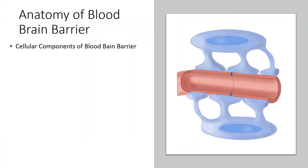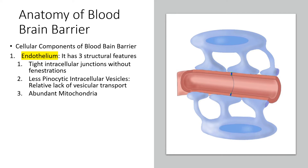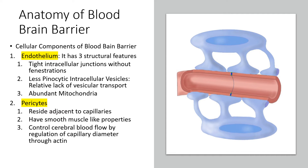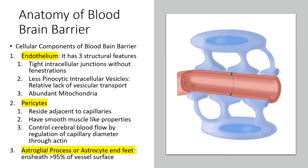The endothelium of the blood-brain barrier has three specific structural features: tight intracellular junctions without fenestrations, fewer pinocytic intracellular vesicles resulting in a relative lack of vesicular transport, and abundant mitochondria. Pericytes reside adjacent to capillaries, have smooth muscle-like properties, and control cerebral blood flow by regulating capillary diameter through actin. Astroglial processes (astrocyte end-feet) ensheath more than 95% of the vessel surface.